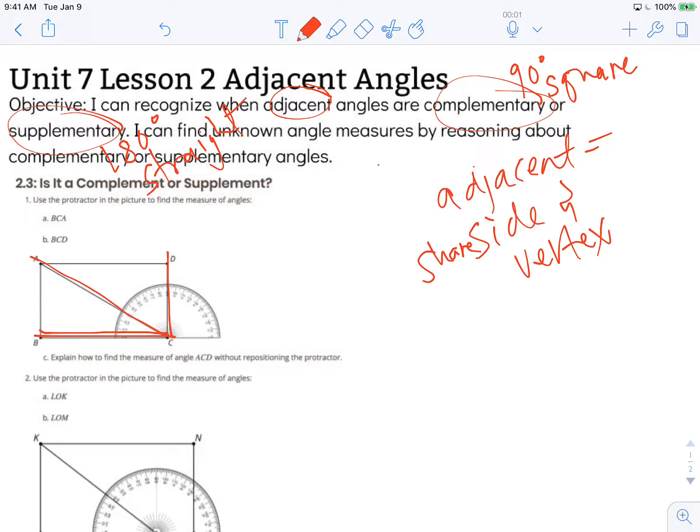Well, BCD is the easier of the two because it's that square angle. It's a 90 degree angle, so we know the measure of that angle is 90 degrees.